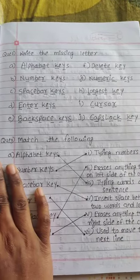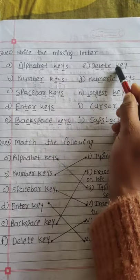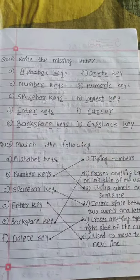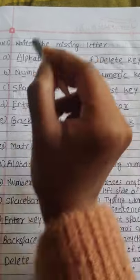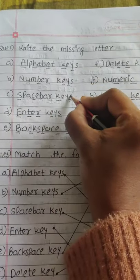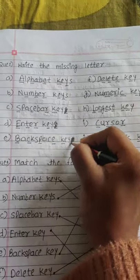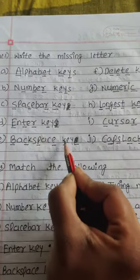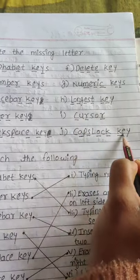Now the missing letters exercise. The key terms to learn the spellings of are: alphabet key, number key, space bar key, enter key, backspace key, delete key, numeric keys, numeric pad, longest key, cursor, and caps lock key. You will need to fill in the missing letters for these words.